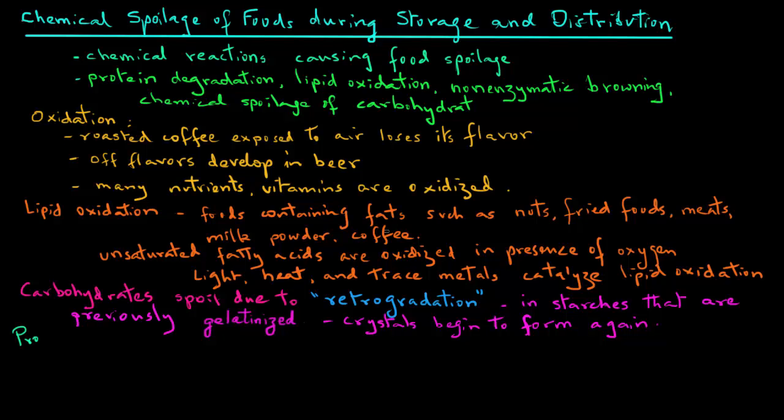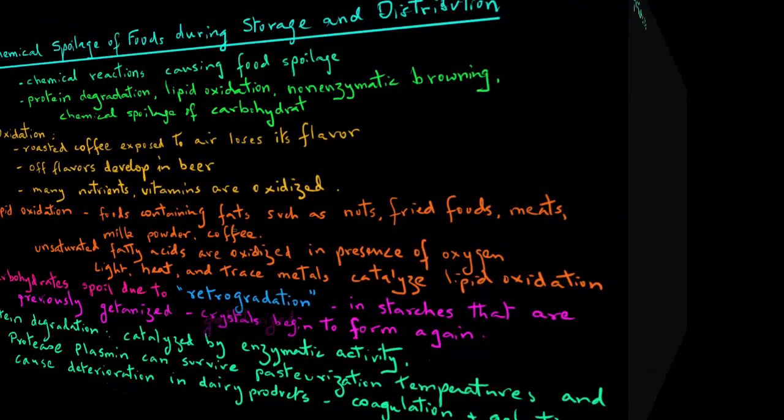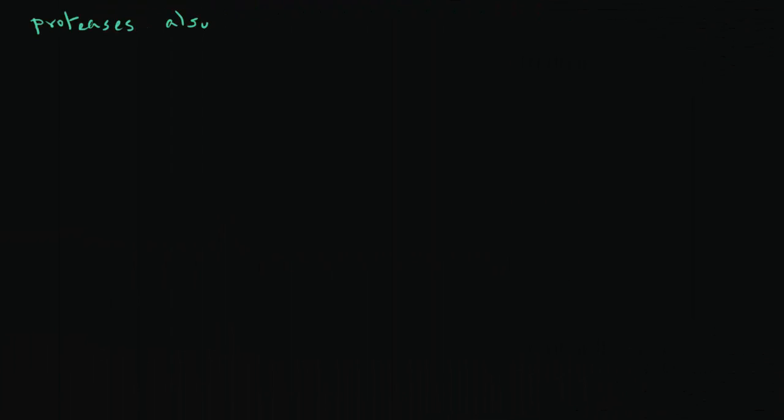Protein degradation is often catalyzed by the enzymatic activity. For example, protease plasmin can survive pasteurization temperatures and then can cause deterioration of dairy proteins in milk, resulting in coagulation and gelation. Proteases also cause mushiness in meats by breaking down the meat proteins.